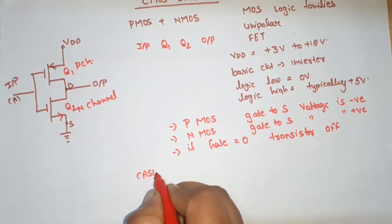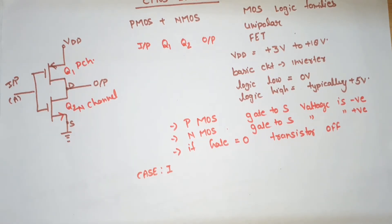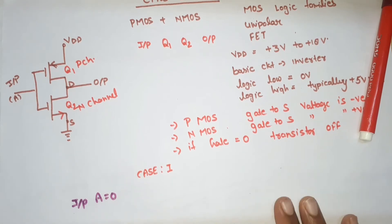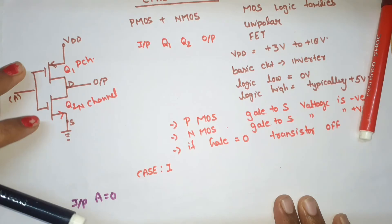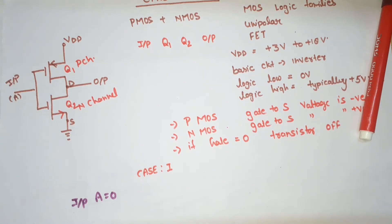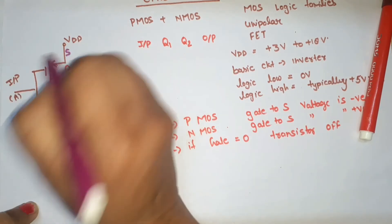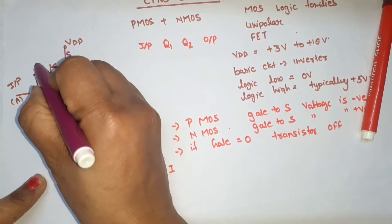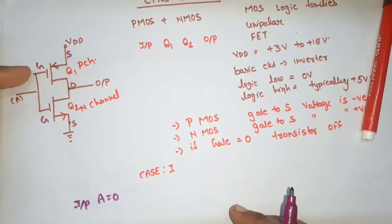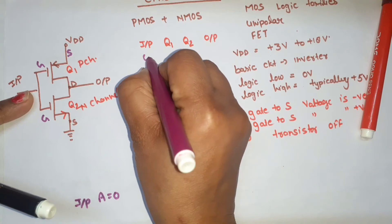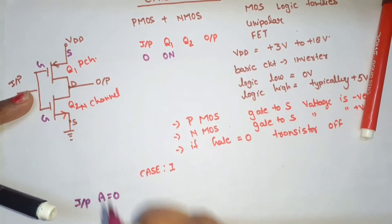Case 1: input A is equal to 0. If we apply A=0 to the gate, both gates are 0. Now for the P-channel, VDD is the source. The gate voltage is 0 and the source is at high voltage, so the gate-to-source voltage is negative. Therefore, when input is 0, Q1 (PMOS) will be on.